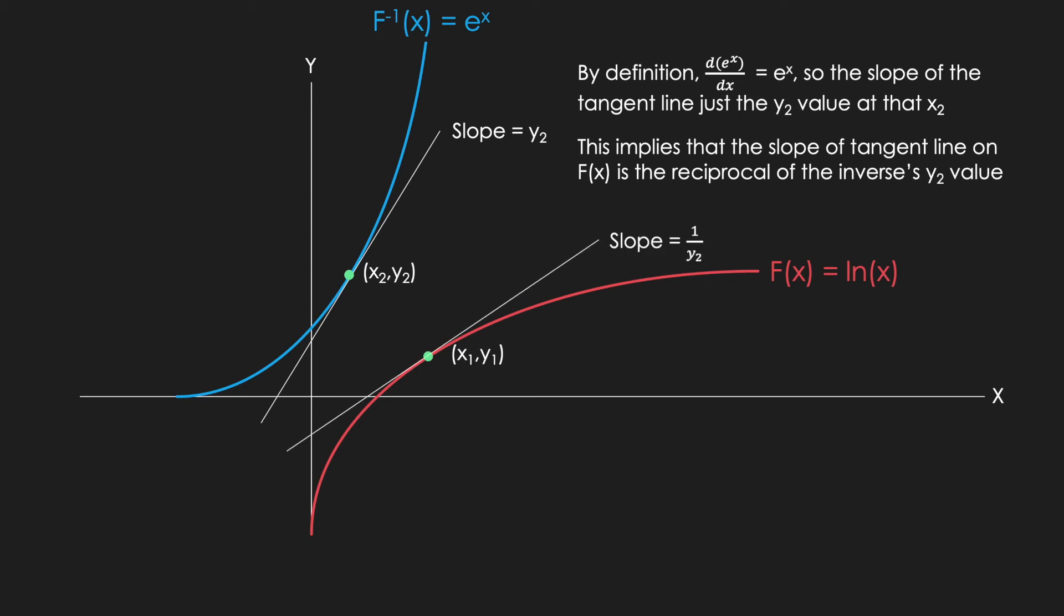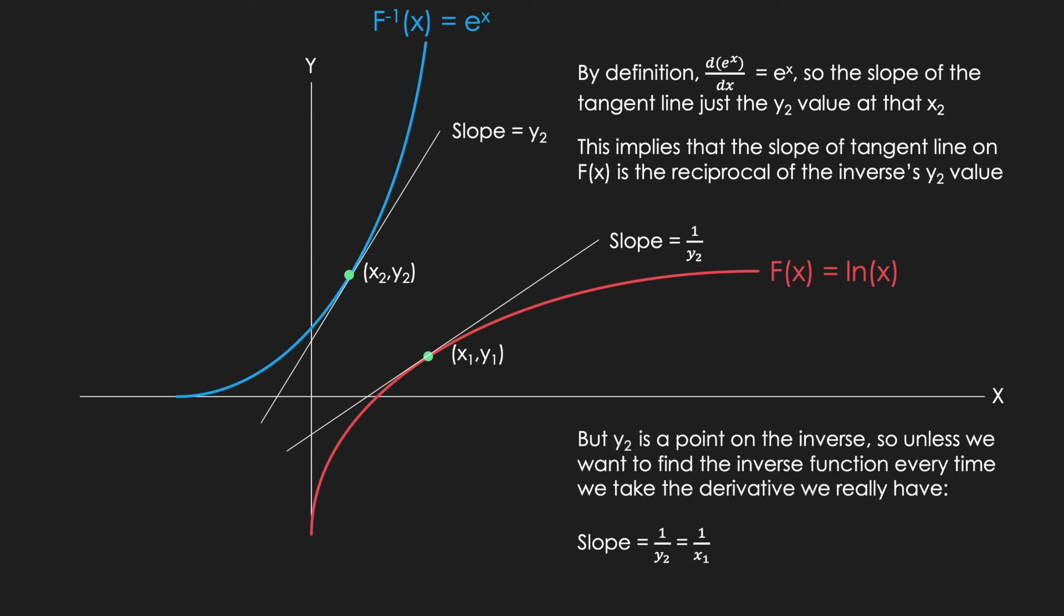The only problem is that y2 is a point on the inverse function. So unless we want to find the inverse function every time we take the derivative, we should really write the slope differently. And in the end, we have the slope equals 1 over x.